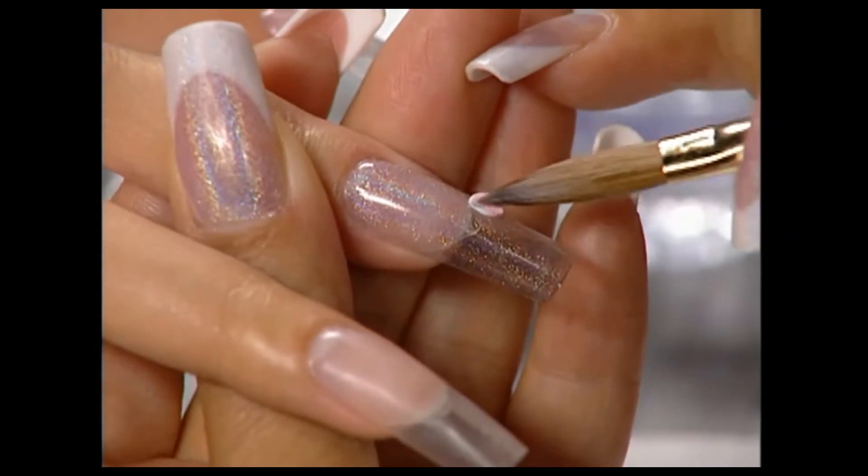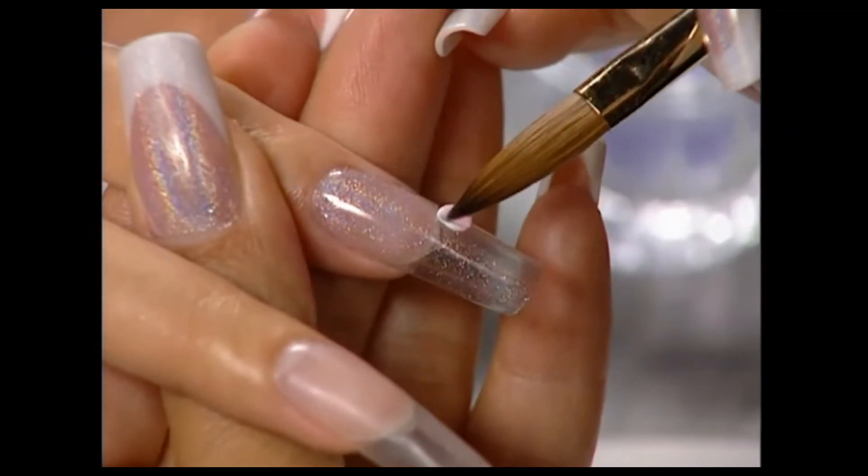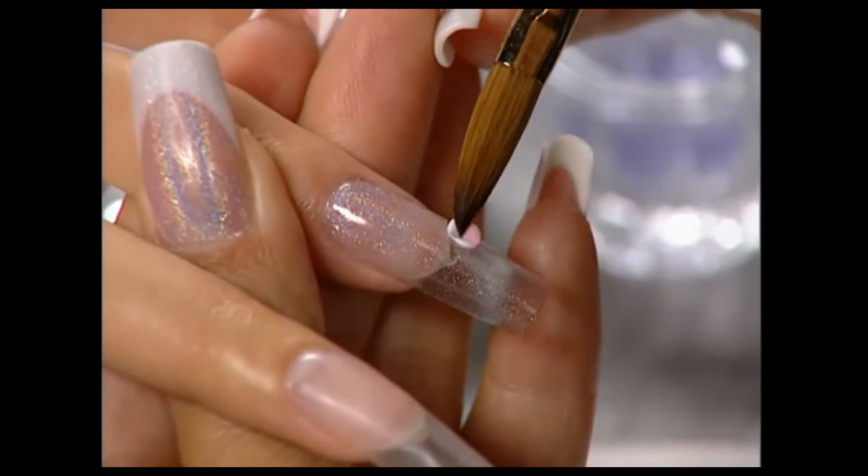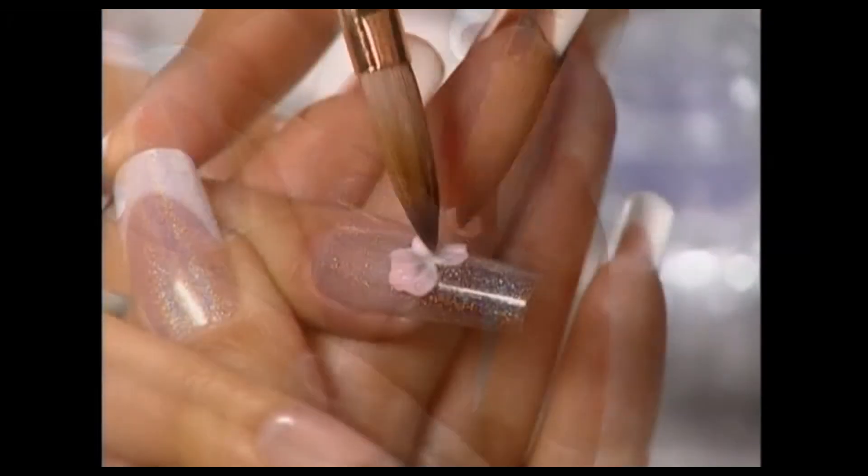To make the petals of the flower, apply the acrylic to the nail and press with the brush to flatten the center. Push in on the outside of the petal to detail the shape.